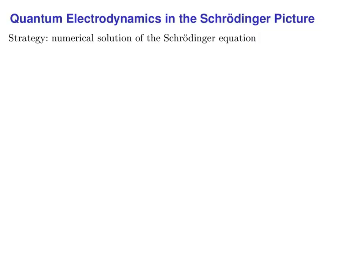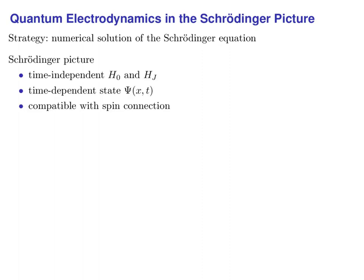To find out, let's go back to the point where both theories are still compatible — that's the Dirac equation for a single particle. A very simple idea is to solve the Schrödinger equation numerically. We are in the Schrödinger picture, where we have time-independent Hamiltonians for the free time evolution and for the interaction. These operators act on the time-dependent state of the system, a many-particle wave function over spacetime. As long as we stay in this picture, we remain compatible with the spin connection and thus with general relativity.